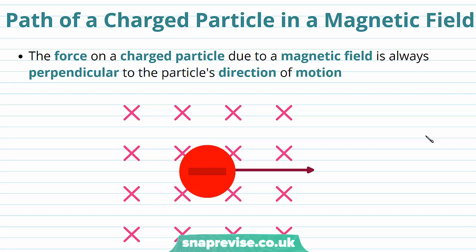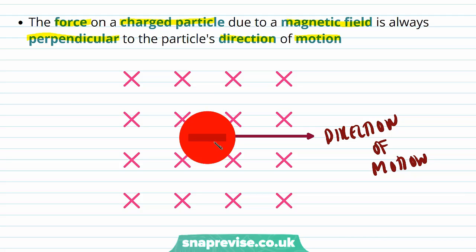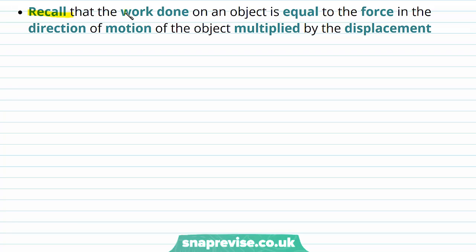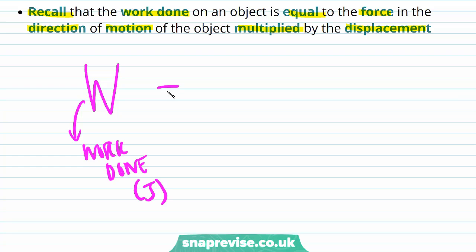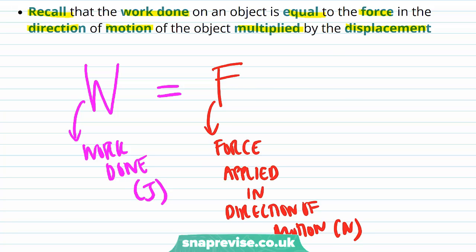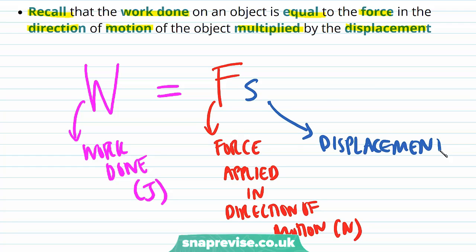Now we're going to think about the path that a charged particle might follow in a magnetic field. The force on a charged particle due to a magnetic field is always perpendicular to the particle's direction of motion. Using the left hand rule, we find the force is acting downwards and is perpendicular to the direction of motion. Recall that work done on an object equals the force in the direction of motion multiplied by the displacement: W (in joules) equals F (in newtons) times S (in metres). Since velocity is perpendicular to the force, there is never any displacement in the direction of force, so the work done is zero.